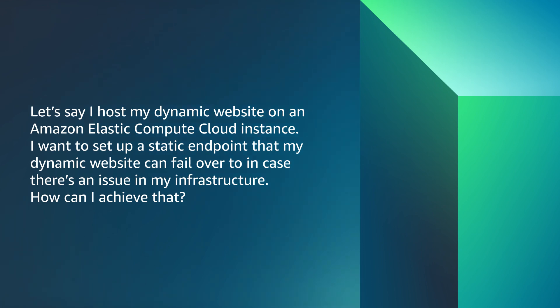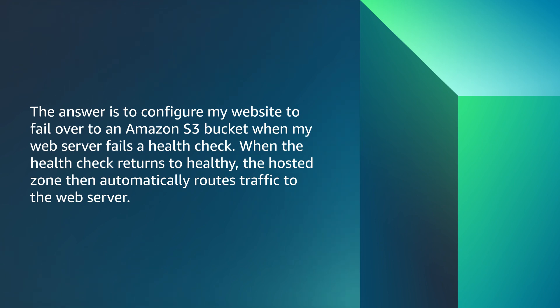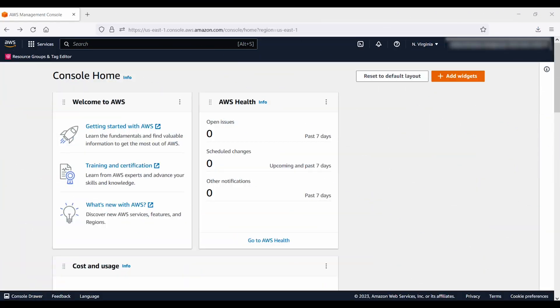I want to set up a static endpoint that my dynamic website can fail over to in case there's an issue with my infrastructure. The answer is to configure my website to fail over to an Amazon S3 bucket when my web server fails a health check. When the health check returns to healthy, the hosted zone then automatically routes traffic back to the web server.